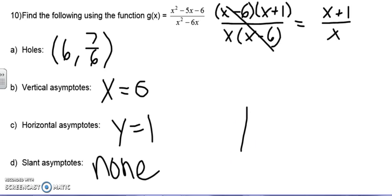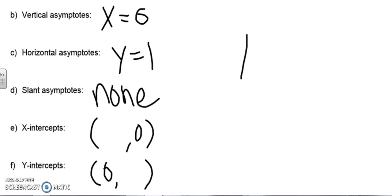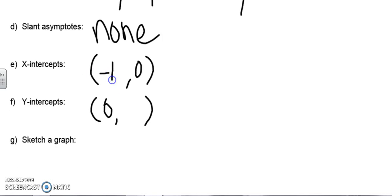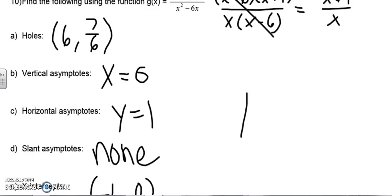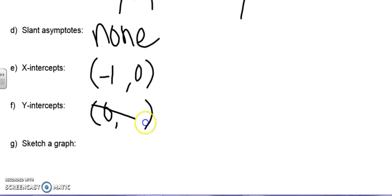Let's move it down. x-intercept is when y is 0. y-intercept is when x is 0. So the y value is 0 when the top is 0. So that will be negative 1. And if I plug in 0 for all my x's, that can't happen. So that's a none.